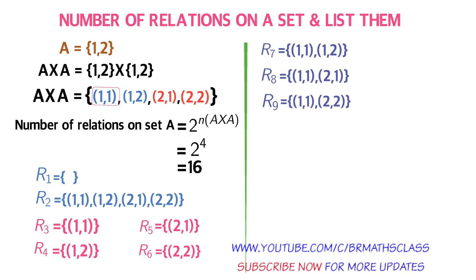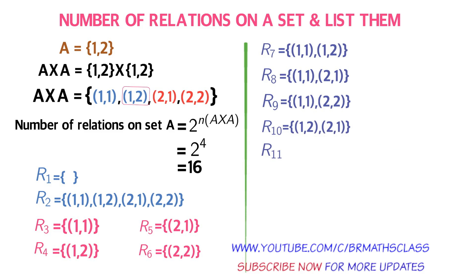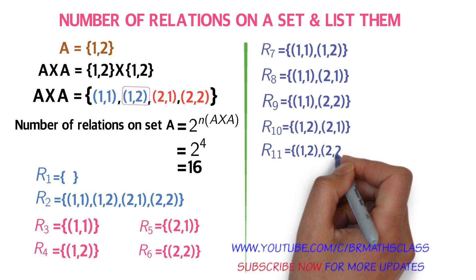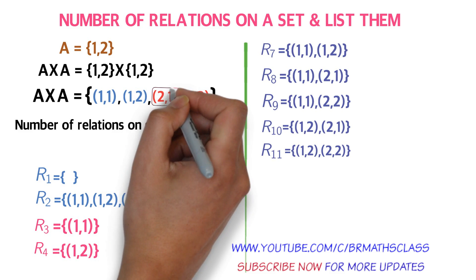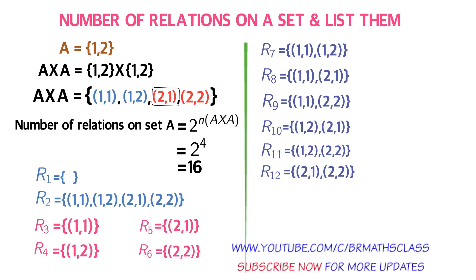Now R10: take ordered pair (1,2), move right — the immediate next is ordered pair (2,1). R11: take ordered pair (1,2), move right, and you get ordered pair (2,2). So R10 and R11 both start with ordered pair (1,2). R12: take ordered pair (2,1) and ordered pair (2,2). So we get 6 two-element relations: R7, R8, R9, R10, R11, R12 — each containing exactly two elements.